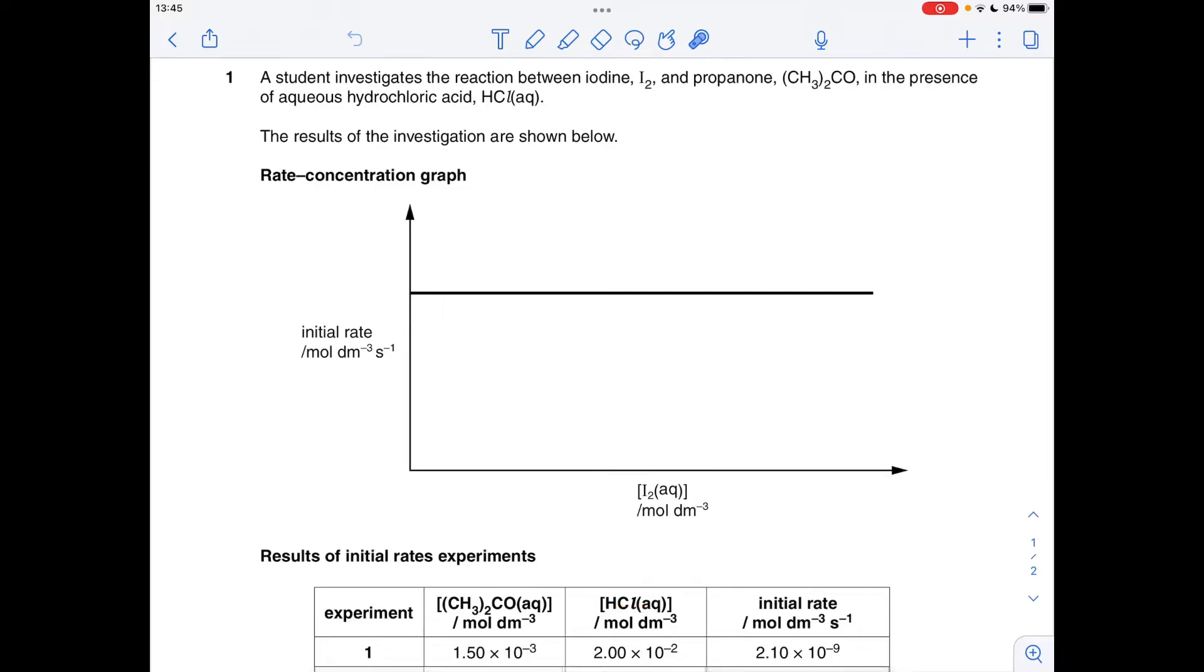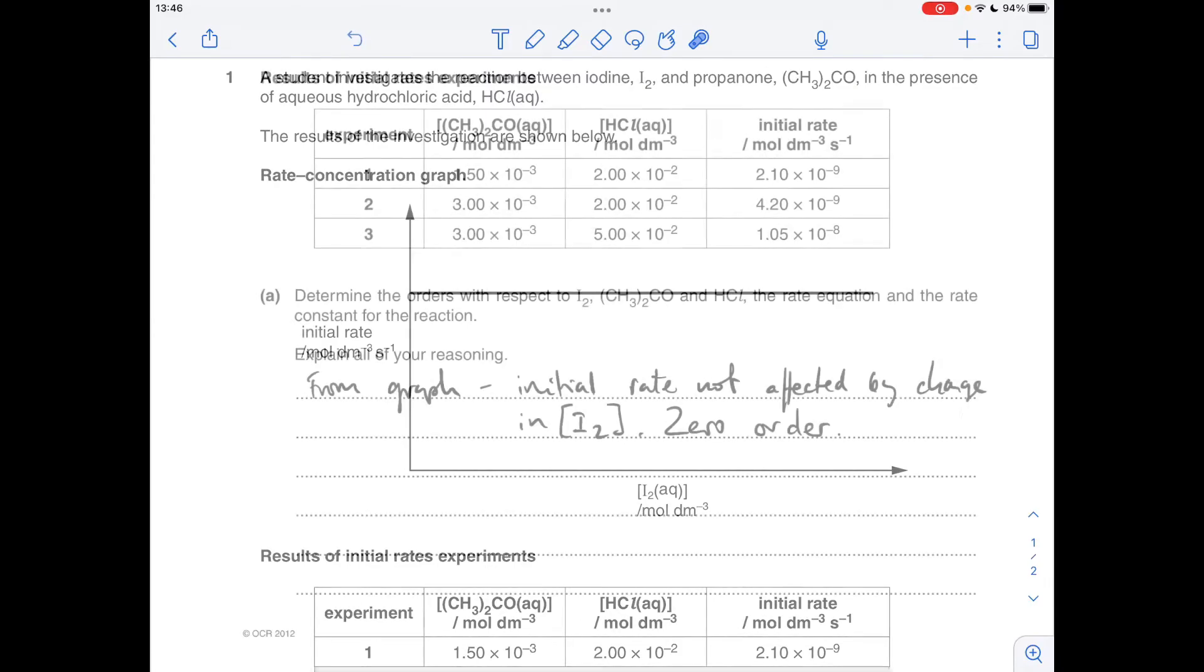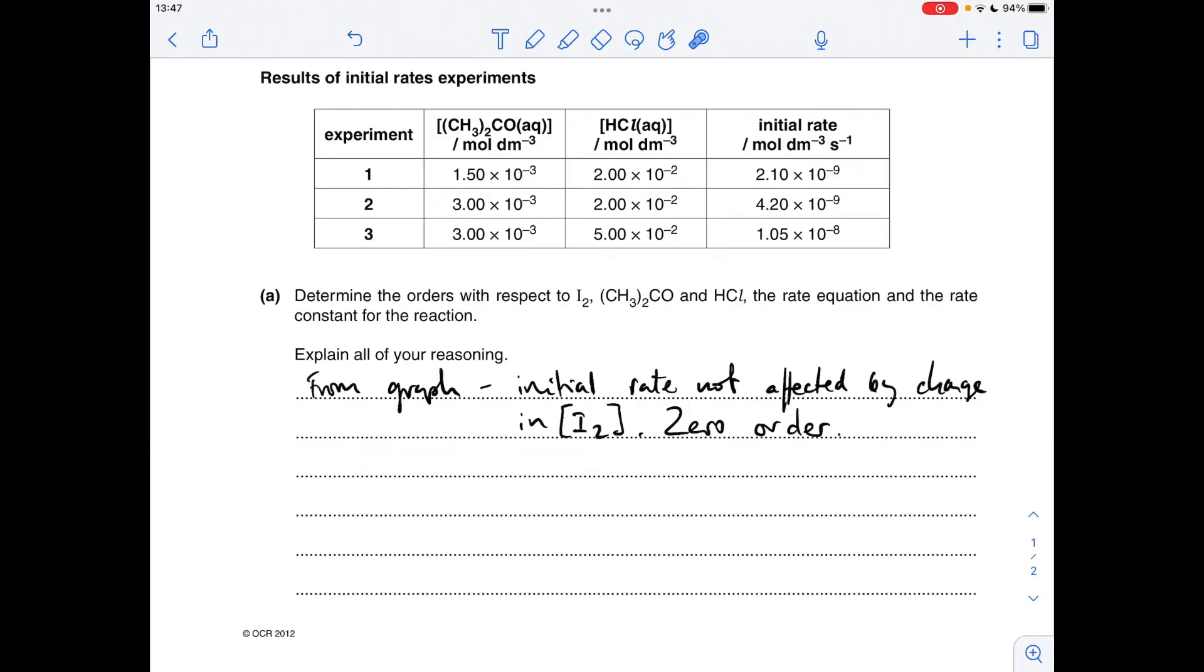So while the graphs are on the screen we'll just talk about that. You can see that the initial rate is constant, it's just flatlining across there, but the concentration of iodine is changing, it's increasing as we go left to right. So obviously the change in concentration of iodine has no effect on the rate, and so it's zero order with respect to I2.